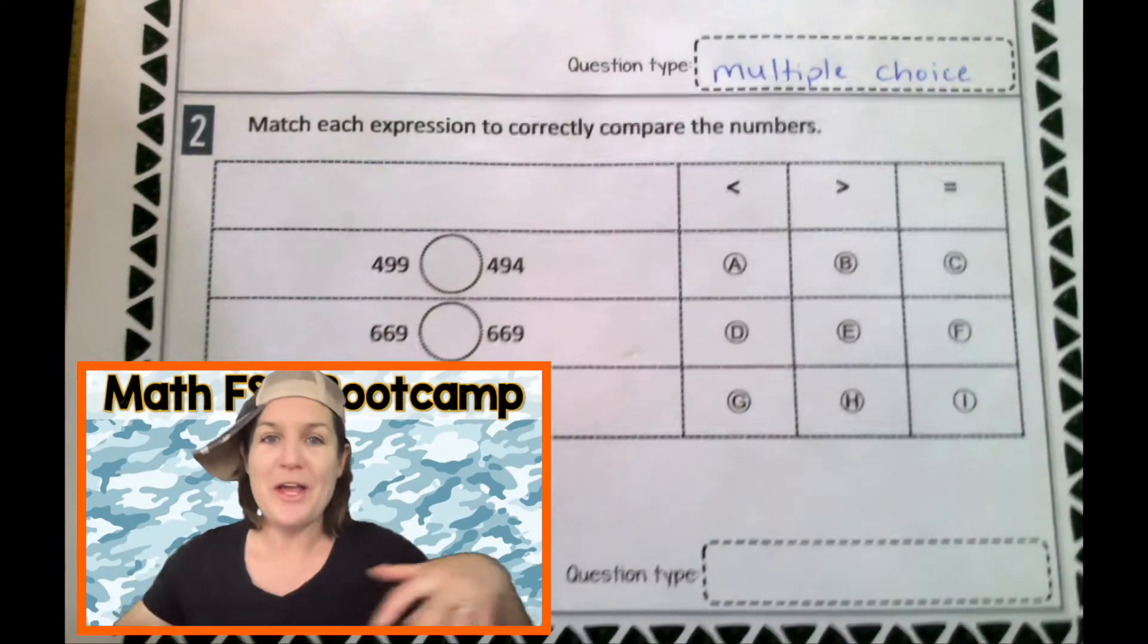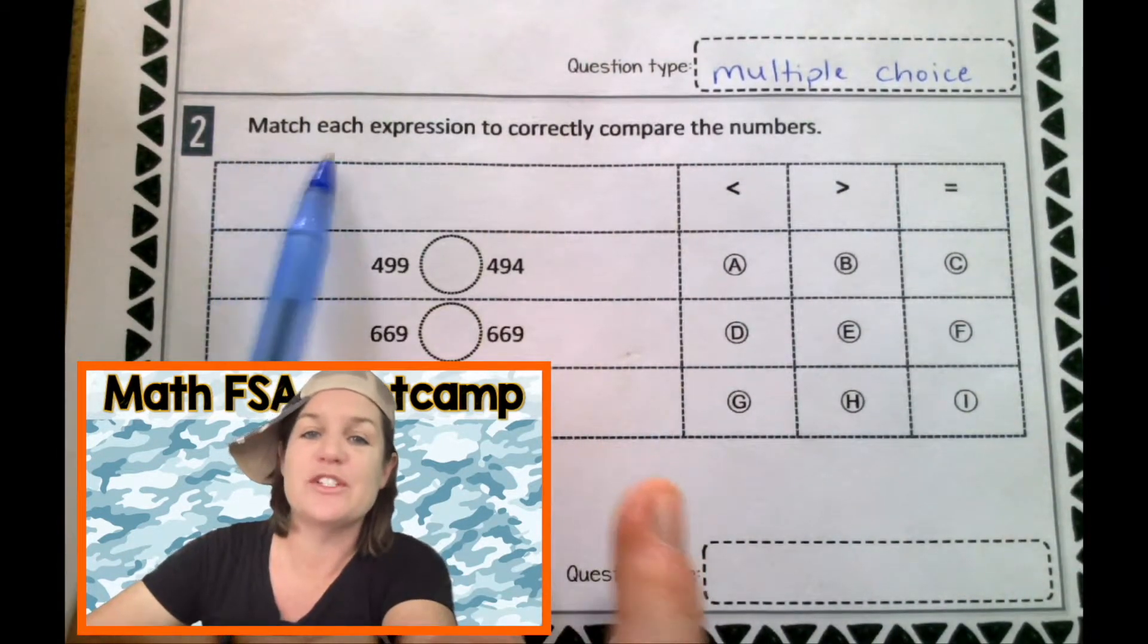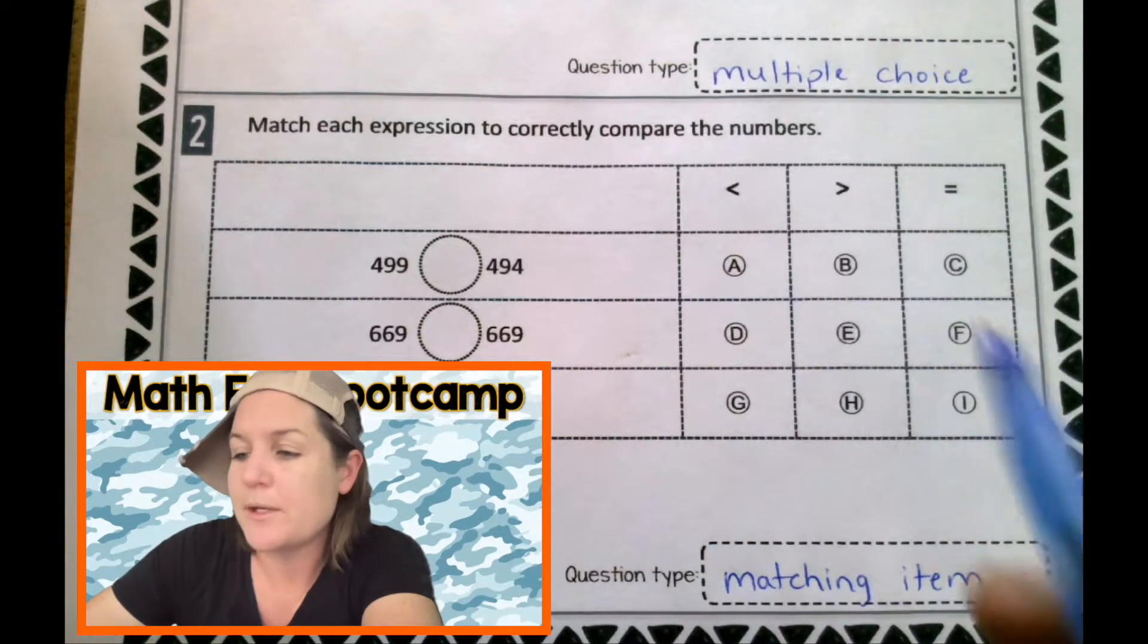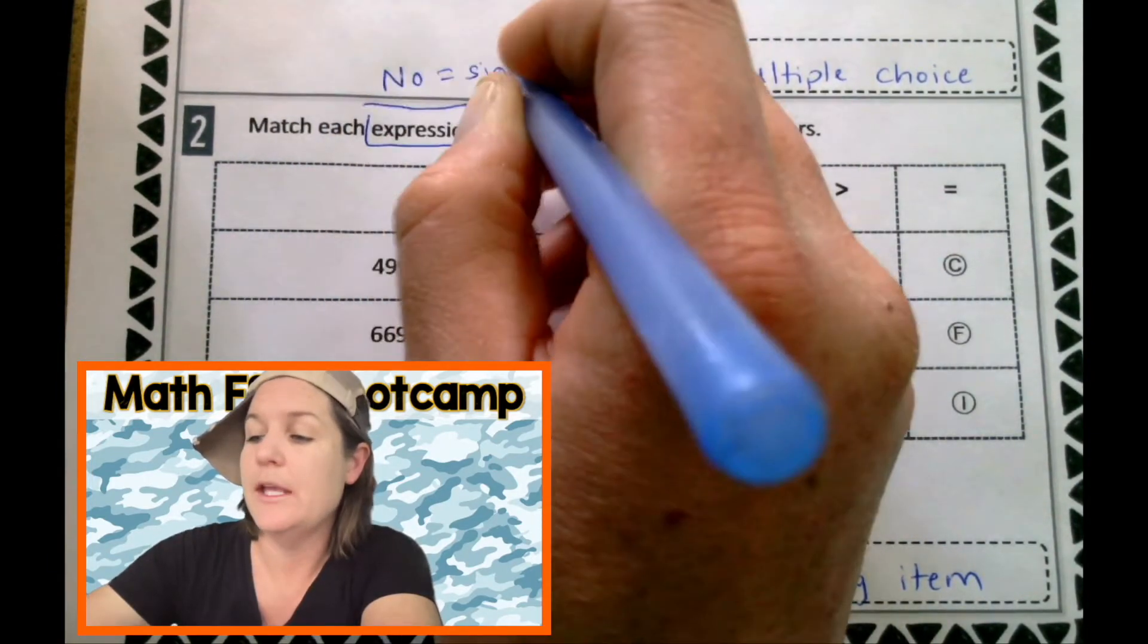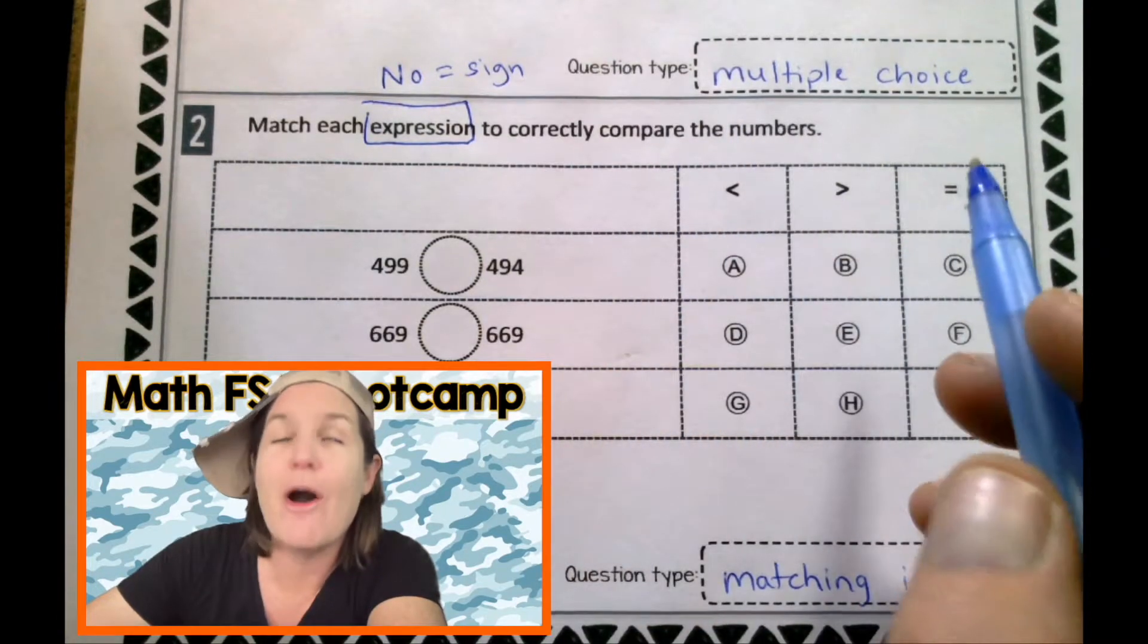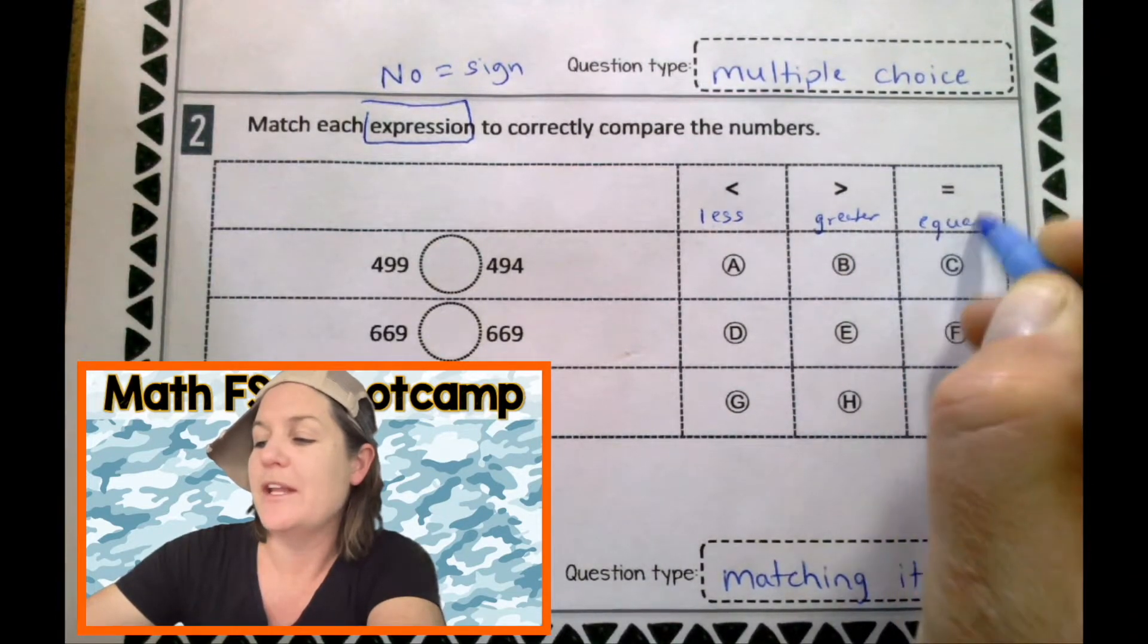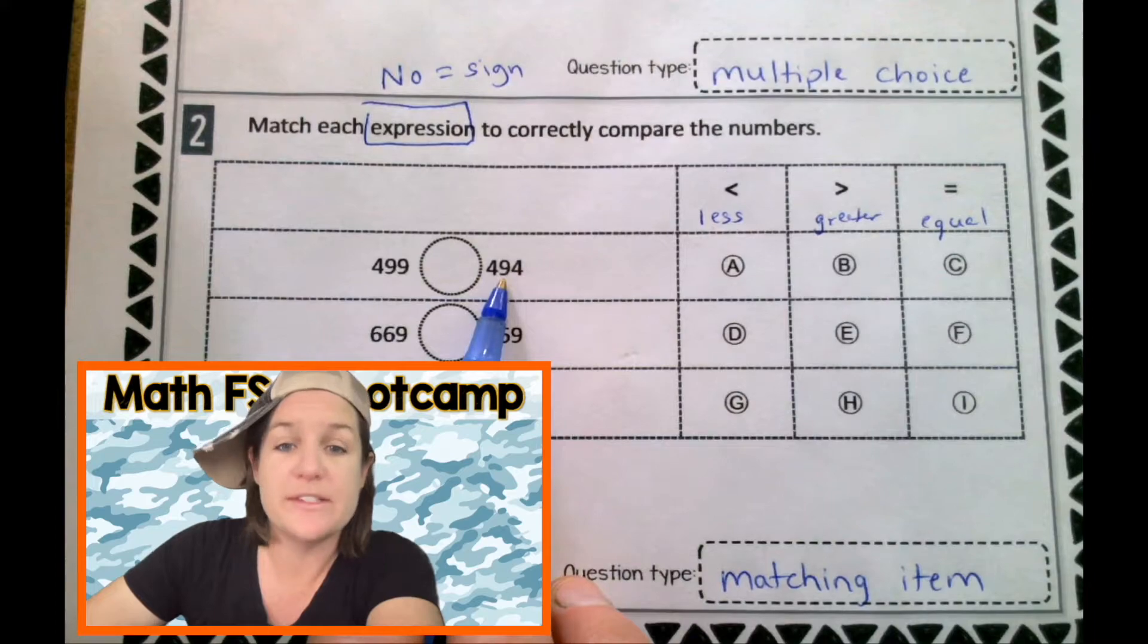All right. Let's check out number two. Oh, you guys know what time it is. It's time for one of my favorite types of problems. The matching item response, because look, it says match. It doesn't always say match up here, but you can tell because we're going to take the row and match it with the correct column. And it's going to be awesome. It's always awesome. Let's read and mark up our text. This says match each expression, which means there is no equal sign. An equation has an equal sign. These are expressions. They do not have equal signs to correctly compare the numbers. I love comparing. OK, so we know that this is a less than sign. This is a greater than sign. And of course, we've been we've had equal signs since like kindergarten. So we definitely know what those are.